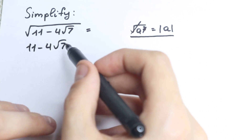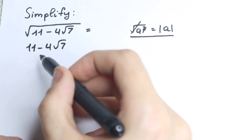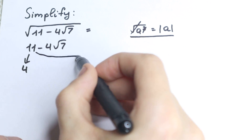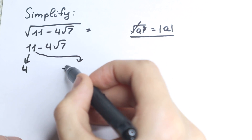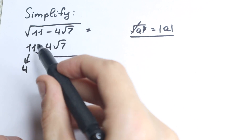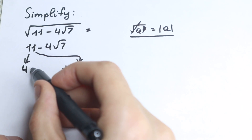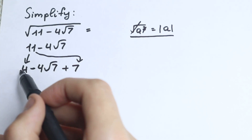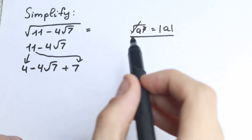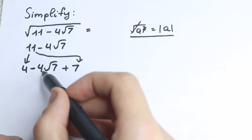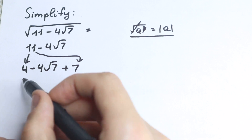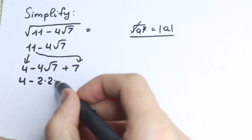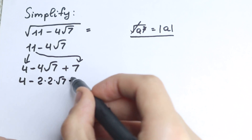Here's the trick: write 11 as 4 plus 7. So we have 4 plus 7 minus 4 square root of 7. Nothing has changed in value. Now write the 4 as 2 times 2, so we get 2 times 2 minus 2 times 2 times square root of 7 plus 7.